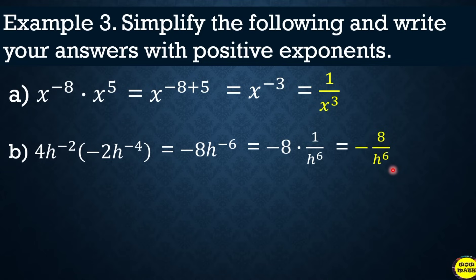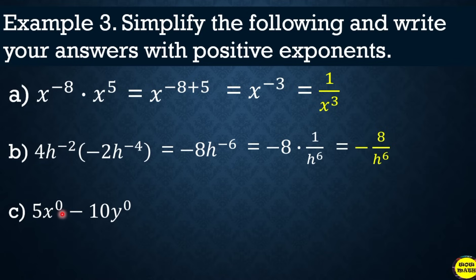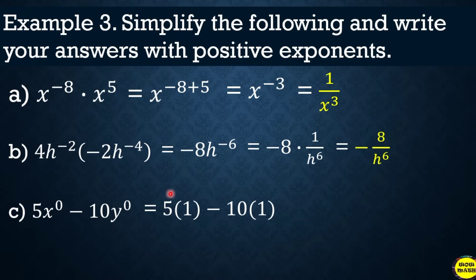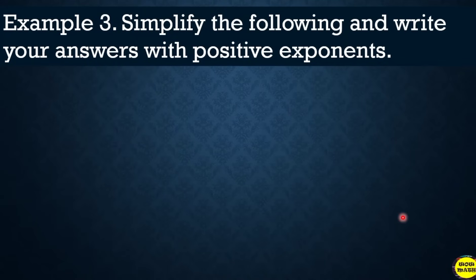Another example: 5x raised to 0 minus 10y raised to 0. The zero is only applied to x and y respectively, not to the coefficients 5 and 10. So x raised to 0 is 1 and y raised to 0 is 1. Therefore: 5 times 1 minus 10 times 1 equals 5 minus 10, and the answer is negative 5.